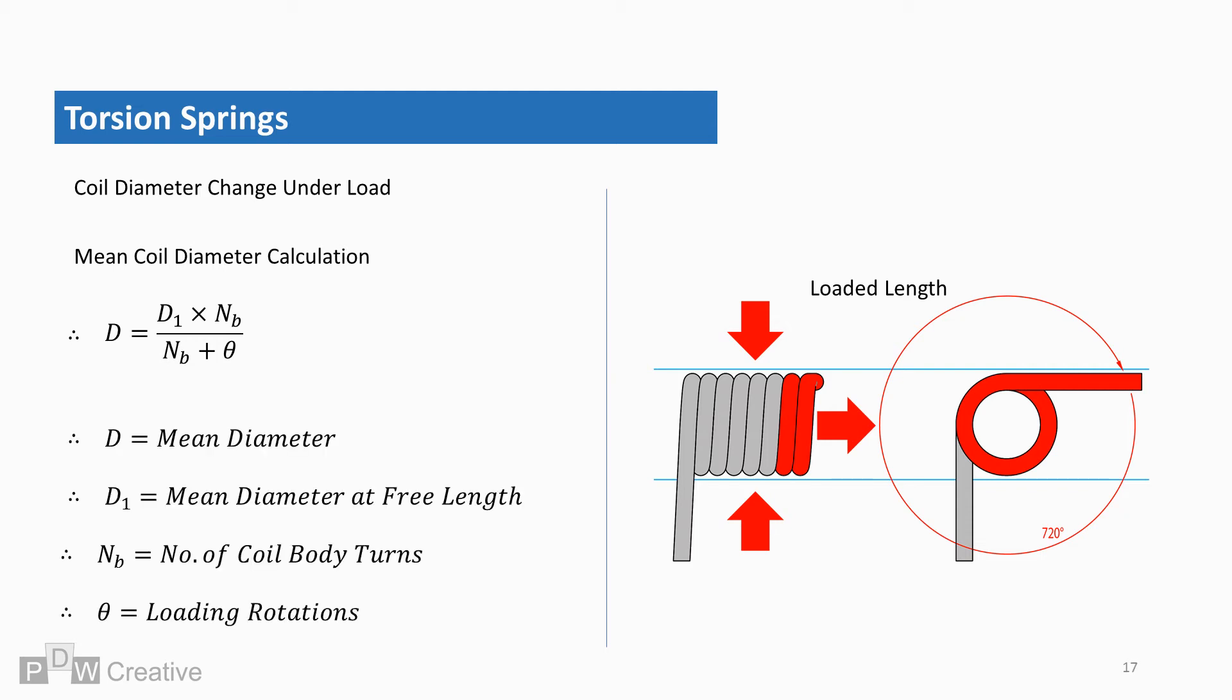Where D is the mean diameter under load, D1 is the mean diameter at free length, which we've assumed we know, NB is the number of coil body turns, and theta is the number of additional rotations.